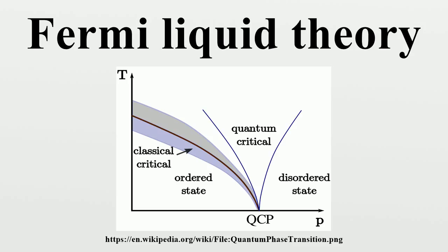The theory explains why some of the properties of an interacting fermion system are very similar to those of the Fermi gas, and why other properties differ. Important examples of where Fermi liquid theory has been successfully applied are most notably electrons in most metals and liquid helium-3.